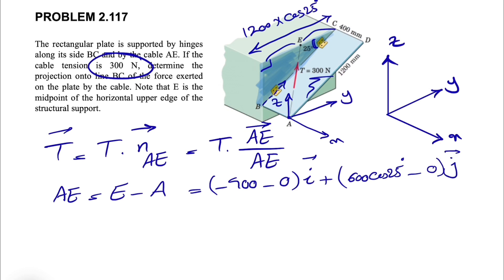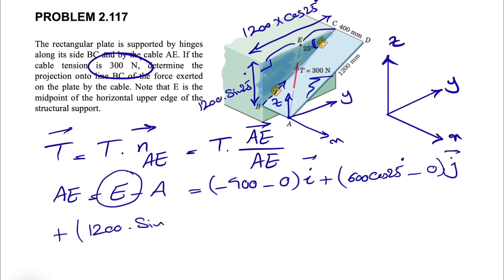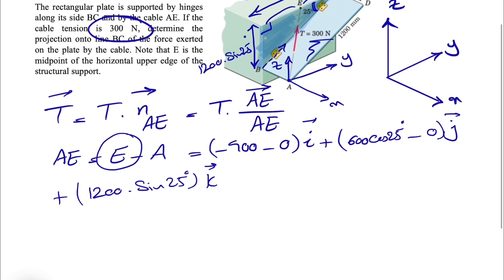The last component is the z-component of E. It makes sense to put our origin at point A — we can put it wherever we want, but then we need to find the coordinates of point E accordingly. The z-component of E is simply 1200 × sin(25°), so we have 1200 times sine of 25 degrees.